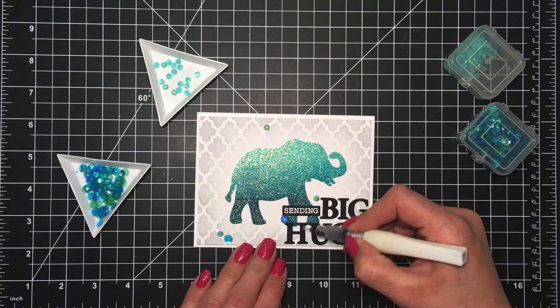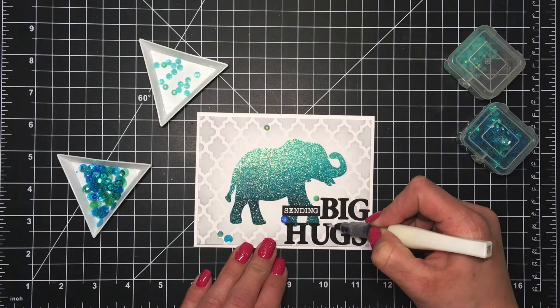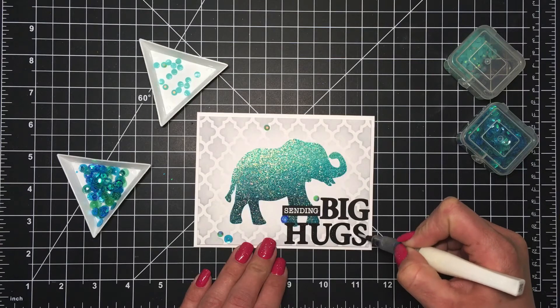And then I've got my Wink of Stella clear glitter brush pen here that I will add over the sentiment big hugs just to give it a little bit more sparkle. And that finishes the card.